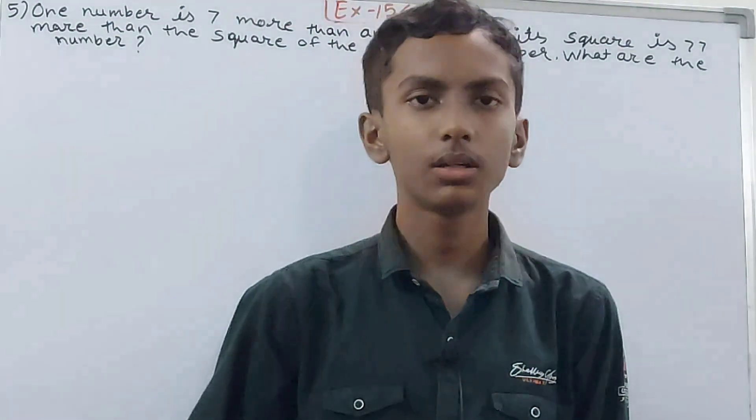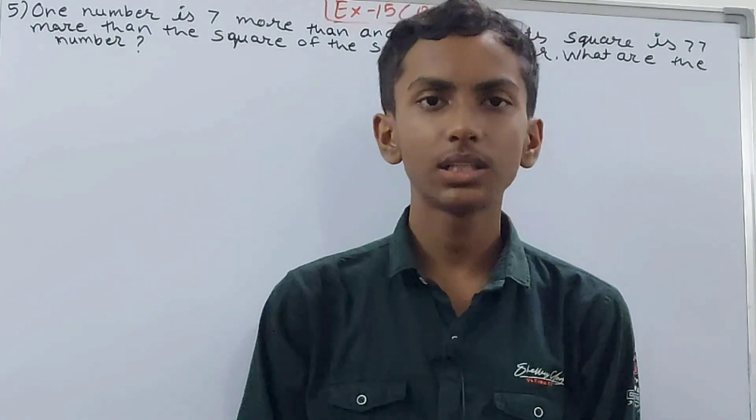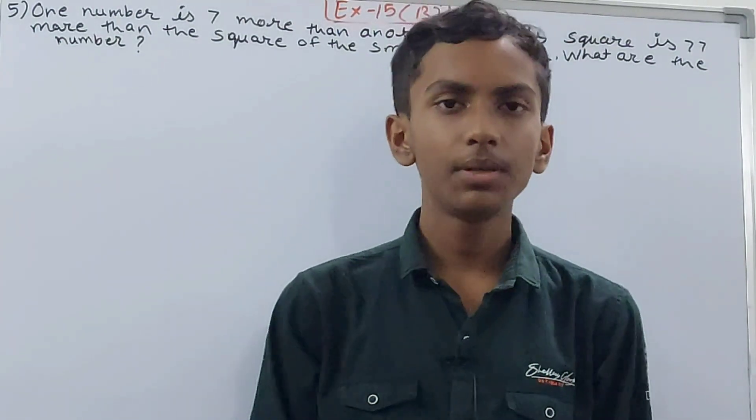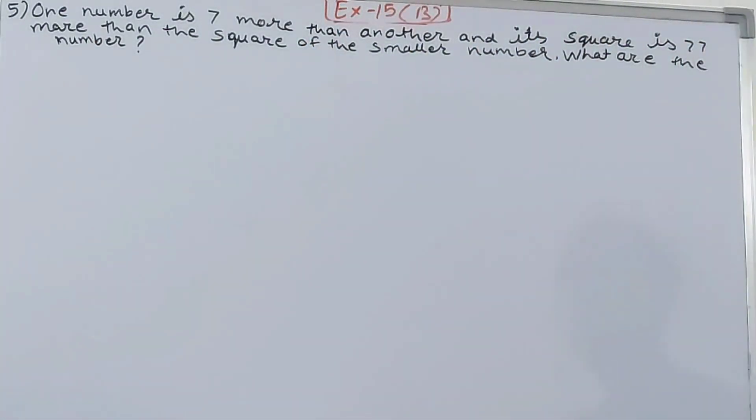Hello friends, welcome back to my YouTube channel Local Learning. In this video, we are going to solve ICSE Mathematics Class 8, Chapter 15 Linear Equations, Exercise 15B, Question Number 5. One number is 7 more than another and its square is 77 more than the square of the smaller number. What are the numbers?